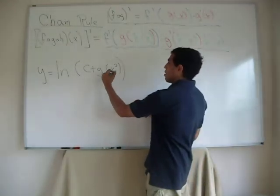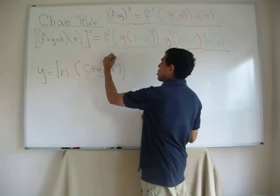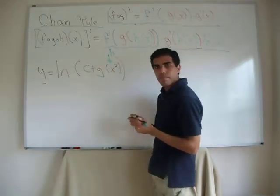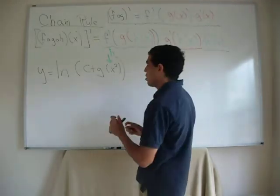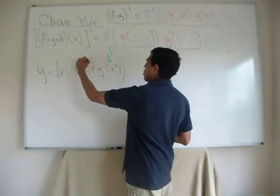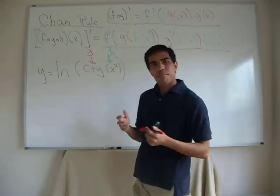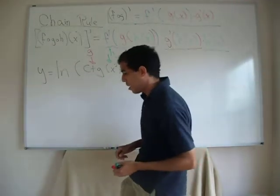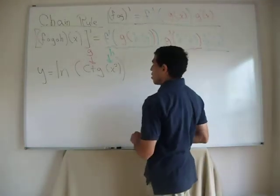So that means that x squared is h. That's the first step. Second step, cotangent, that's g. And third step, you probably figured it by now, logarithmic. F.